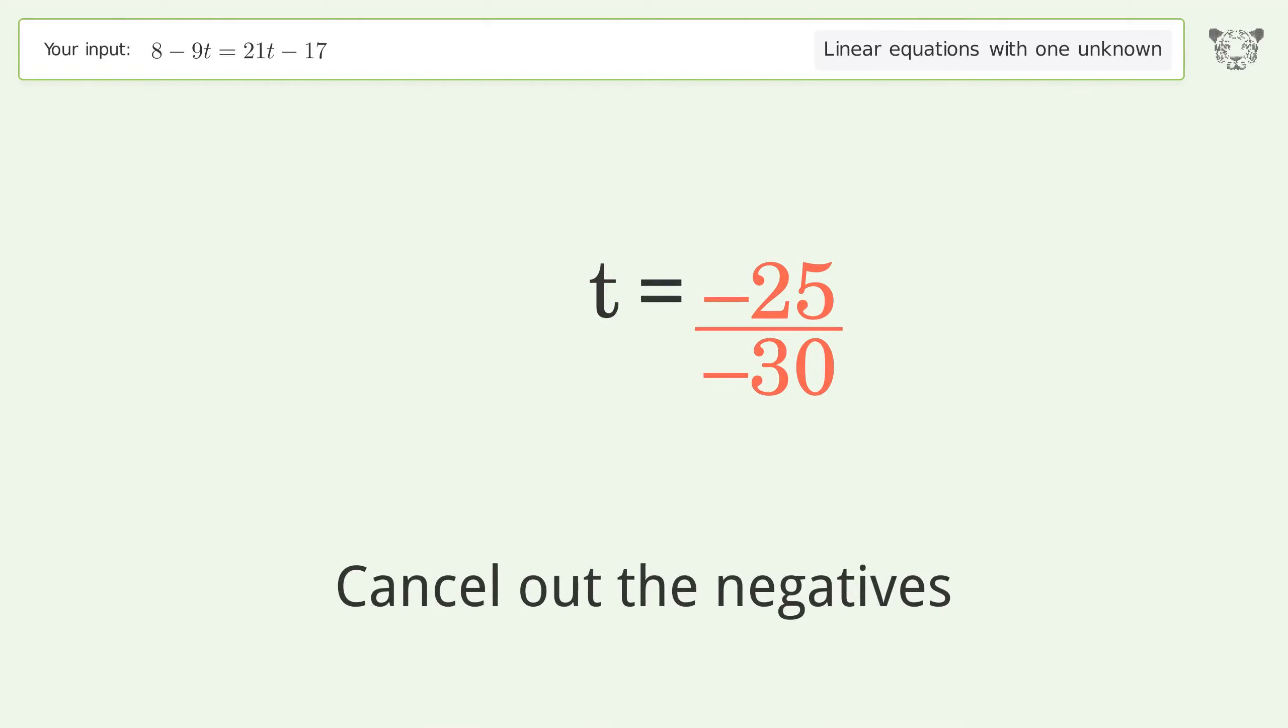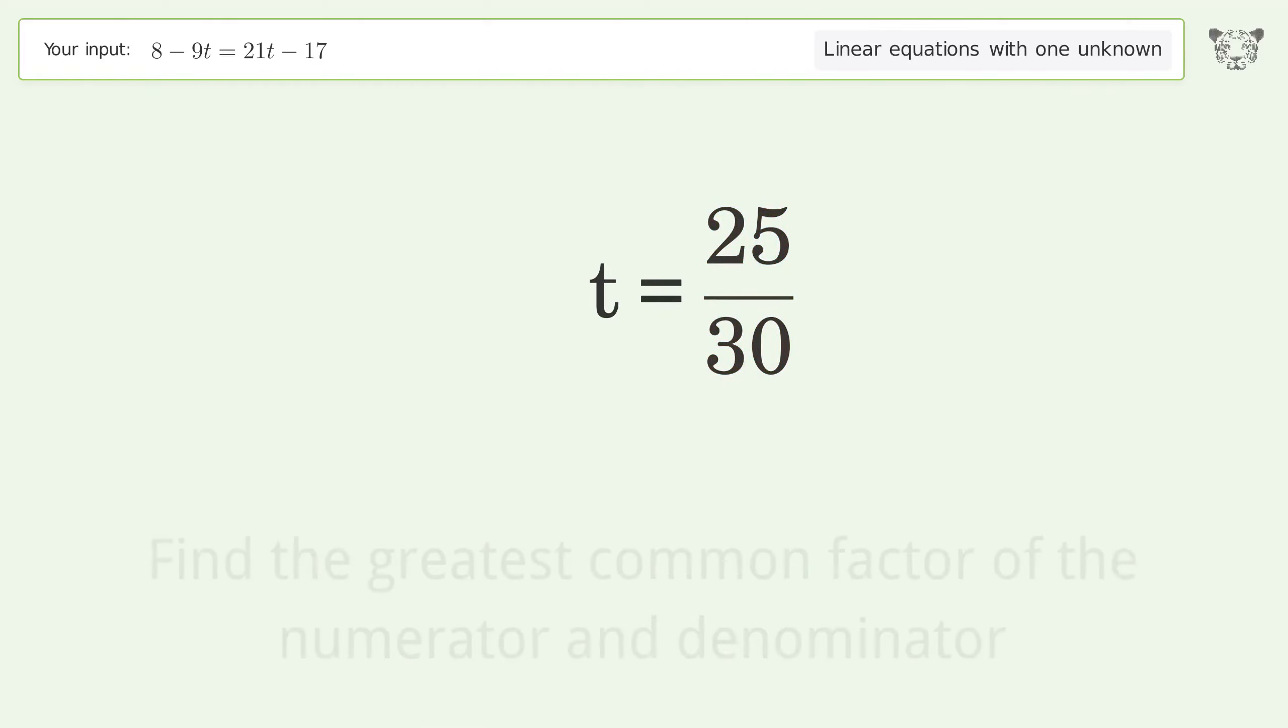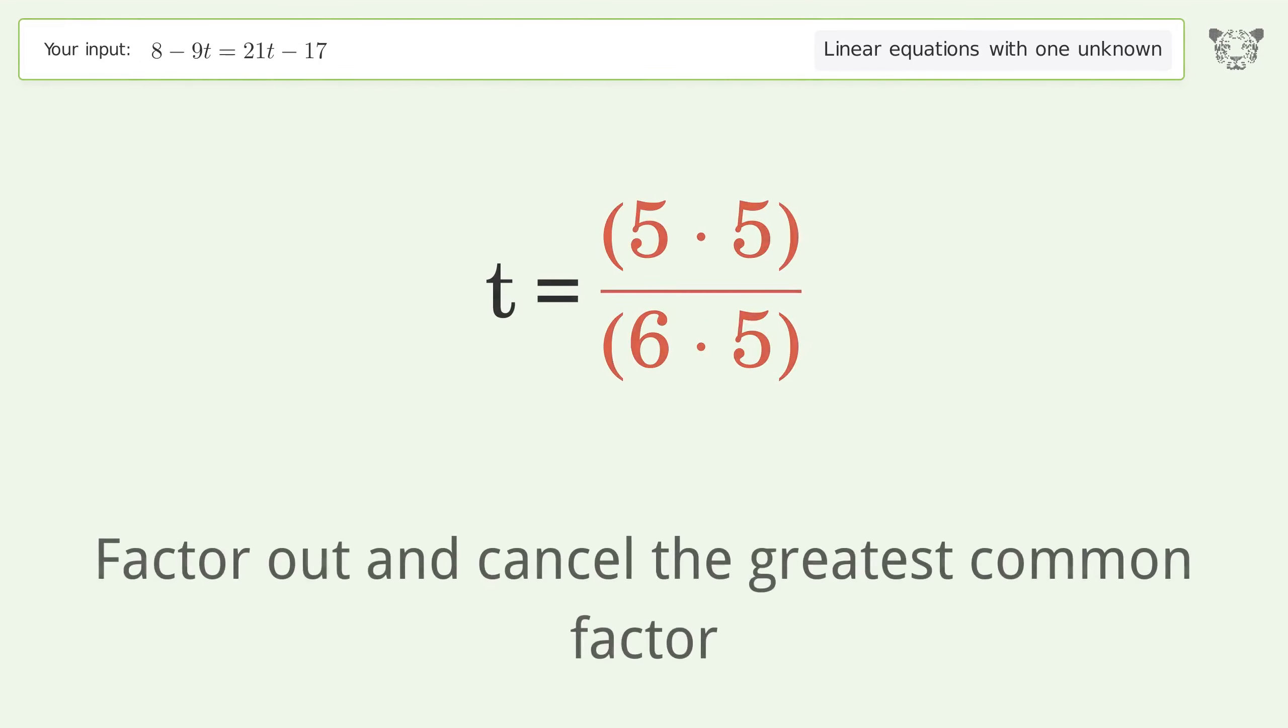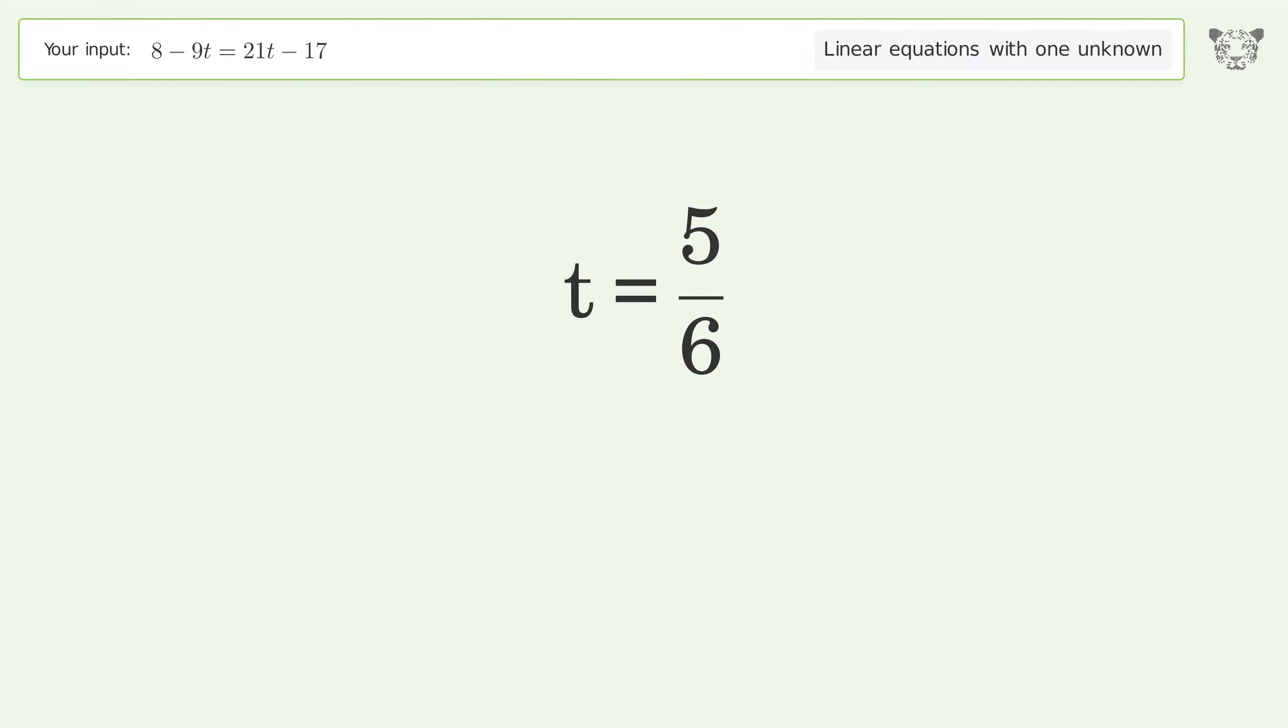Cancel out the negatives. Find the greatest common factor of the numerator and denominator. Factor out and cancel the greatest common factor. So the final result is t = 5/6.